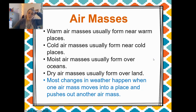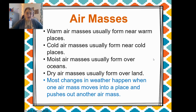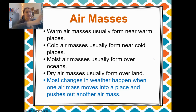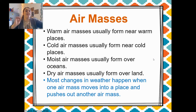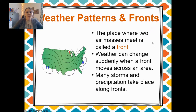Most changes in weather happen when an air mass moves into a place and pushes out another. You can't really see an air mass, but if you've ever heard of a cold front or a warm front on the news — a cold front will push that air mass out and it becomes cold, or a warm front will push the cold air mass out and the warm air mass moves in so we have a warmer temperature.